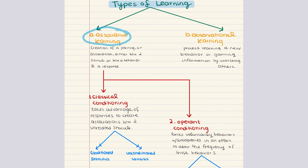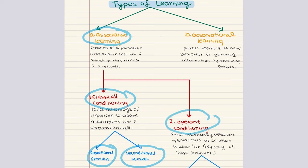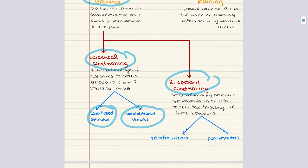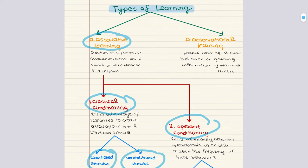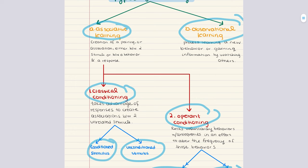First we'll start with discussing associative learning. This is the creation of a pairing or association either between two stimuli or between a behavior and a response. Within associative learning, we're going to cover classical conditioning, which takes advantage of responses to create associations between two unrelated stimuli. We'll discuss conditioned stimulus versus unconditioned stimulus. We'll also cover operant conditioning, which links voluntary behaviors with consequences in an effort to alter the frequency of those behaviors. Here we're going to discuss reinforcement versus punishment. Then we'll move into observational learning, the process of learning a new behavior or gaining information by watching others.